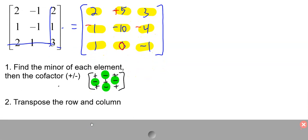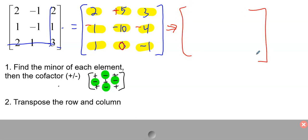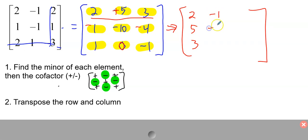Second step: transpose rows and columns. Every row becomes a column and every column becomes a row. The top row was 2, 5, 3 — now that becomes the first column: 2, 5, 3. The second row was negative 1, negative 10, negative 4 — that becomes the second column: negative 1, negative 10, negative 4. Then 1, 0, negative 1 becomes the third column.